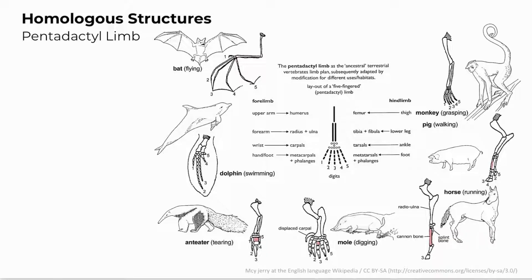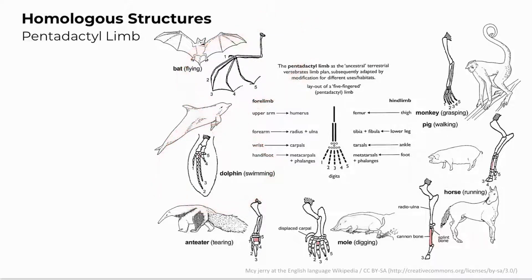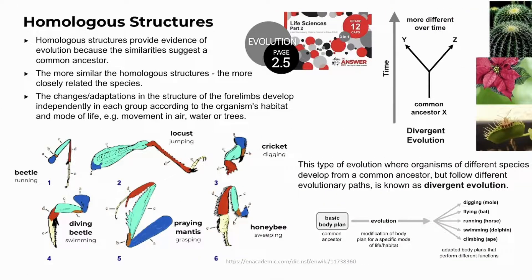Homologous structures are adapted for different functions — flying in a bat, swimming in a dolphin — and are seen as evidence of evolution as they suggest a common ancestor. The more similar the homologous structures, the more closely related the species. One common ancestor giving rise to many species that become more different over time is called divergent evolution.